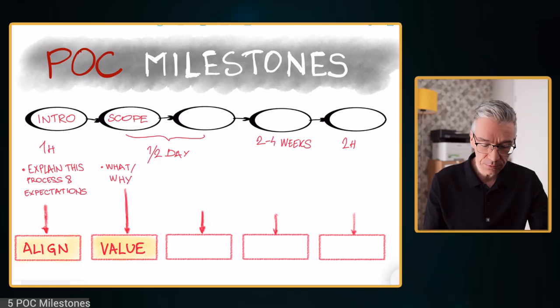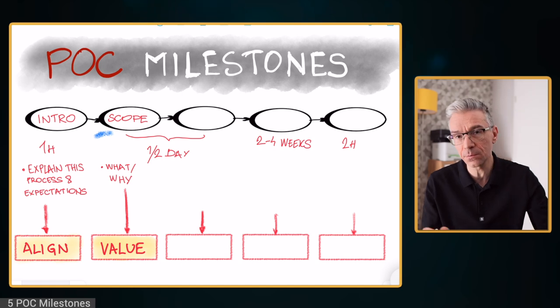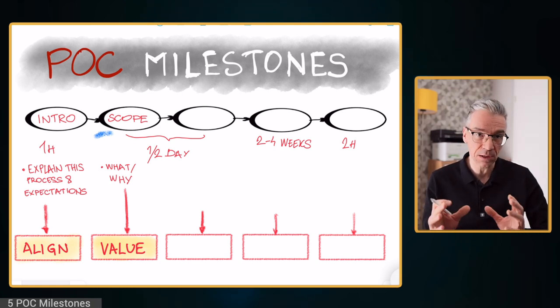We want to get the customer to clearly understand what's expected from them and what we are going to deliver. At the end of this meeting, the customer knows exactly how we are going to structure the POC and what they can expect. So now that we are aligned on how the whole process is going to look like, we go into the actual scoping meeting or discovery. Hopefully we did a lot of discovery before, so this is not going to take a lot of time.